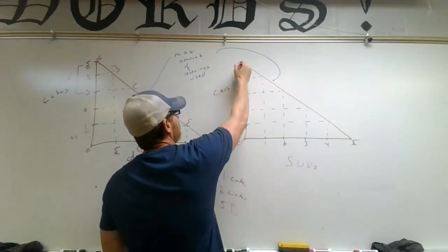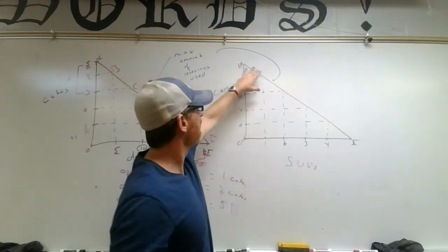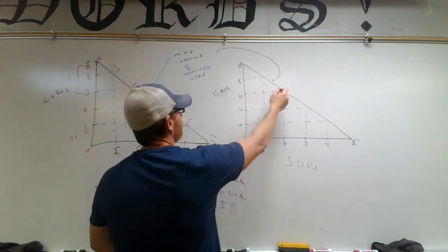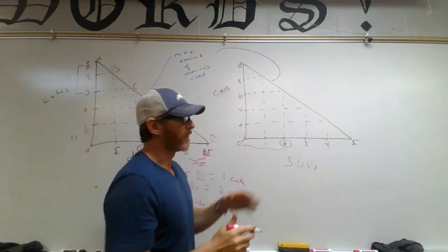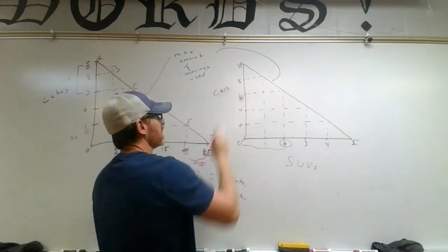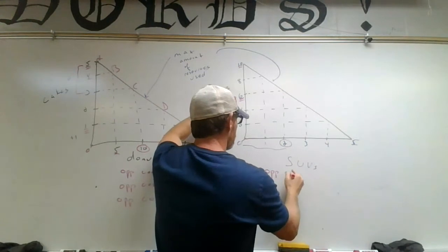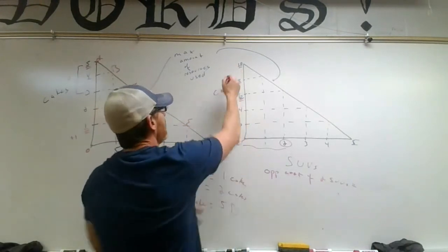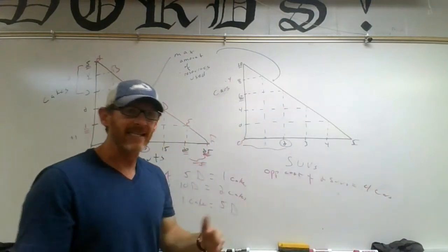If we put all of our resources into making SUVs, we can make five, and make no cars. Or we can put all resources into making cars and make ten, with no SUVs. Or we can make some combination — the maximum is represented by this line. Let's say we start with ten cars and want to add two SUVs. Going up to our line, we find we have enough resources to make six cars. Our opportunity cost of two SUVs is four cars — we gave up four cars to gain the resources to make two SUVs.